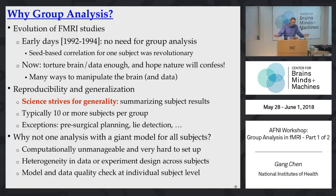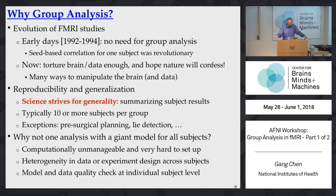Why do we need group analysis? The reason is simple: we do science and need to say something about a population. We recruit some subjects — say, 20 subjects — but in the end we don't make statements specifically about those individuals. Instead, our interest is on some population, or the difference between populations, like patients versus controls. That's why we need to make general statements at the population level.